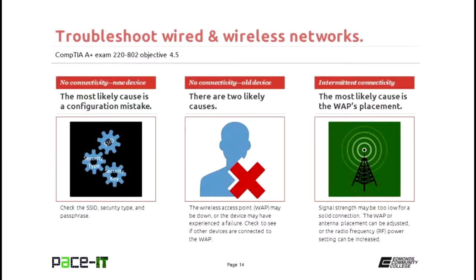No connectivity on an old device — a device that was on the network before and now for some reason cannot log on. There are two likely causes. First, the wireless access point or your device may have a wireless failure. The way to check that is to see if other devices that have been on the wireless network are still on the network. If they are, then you know the problem is with your device.